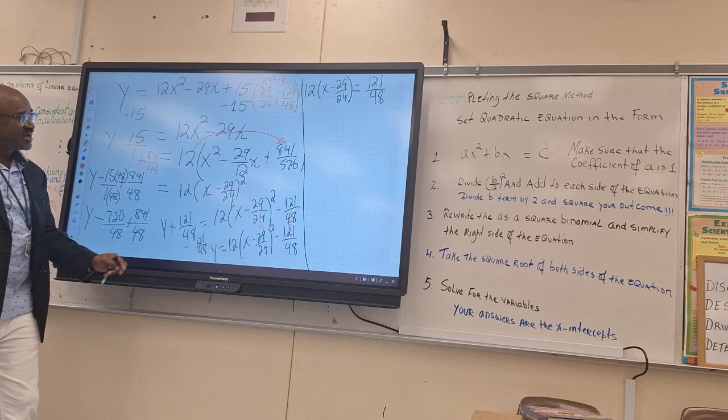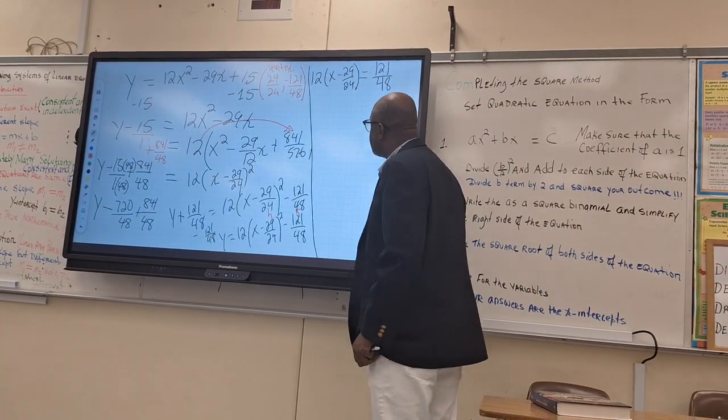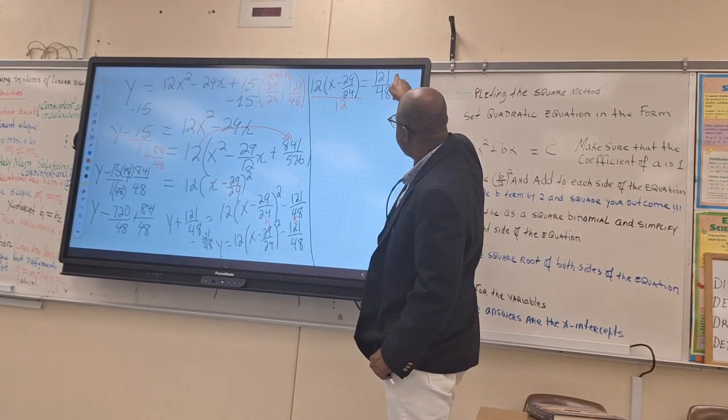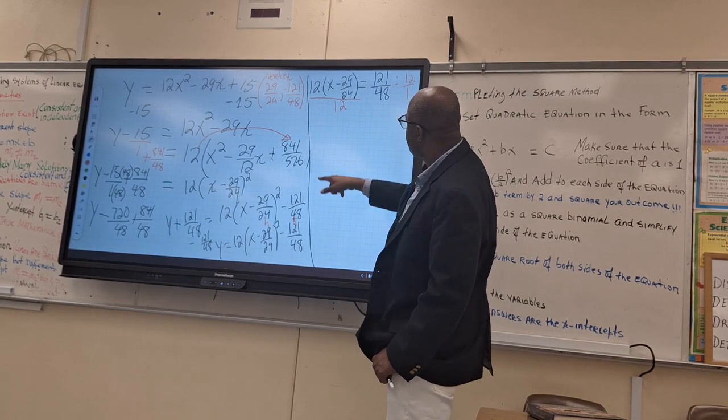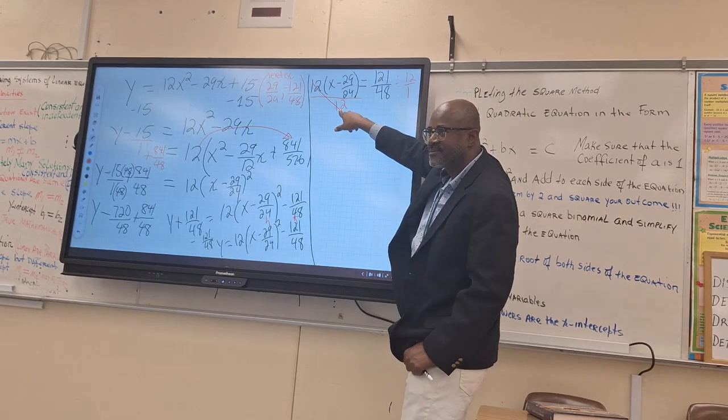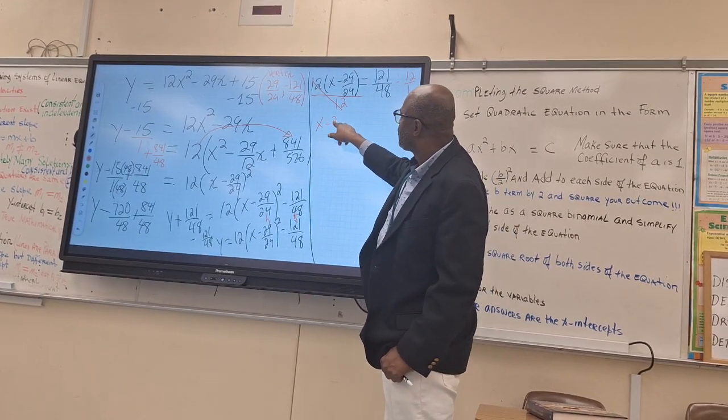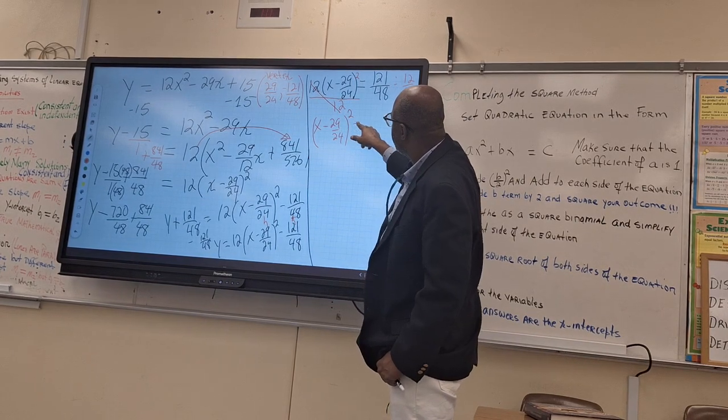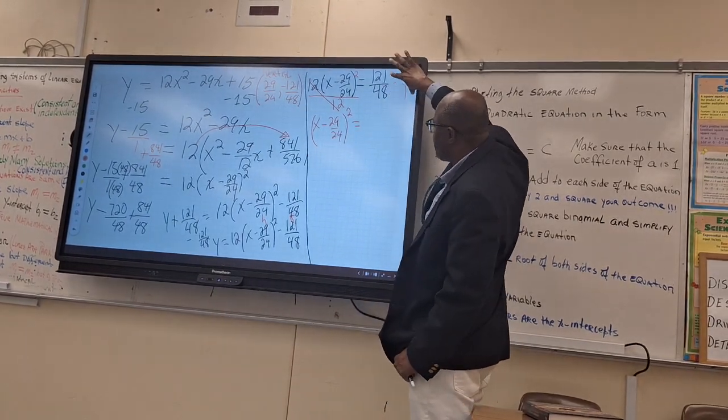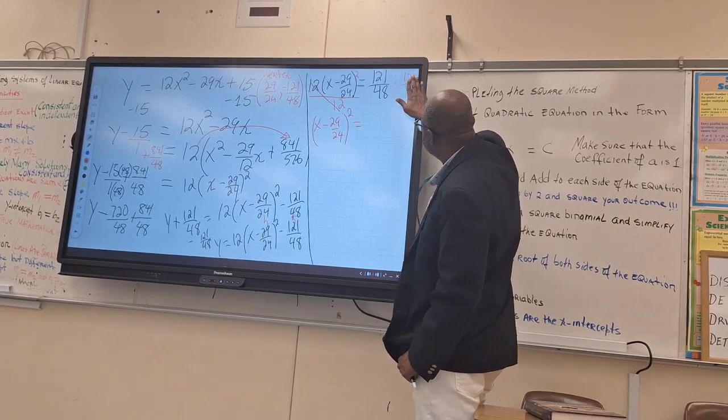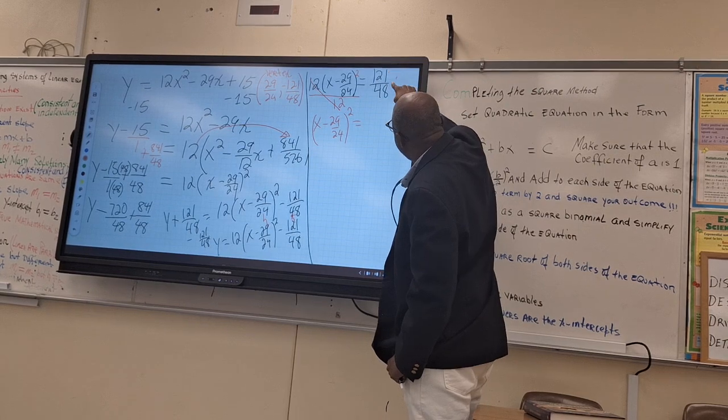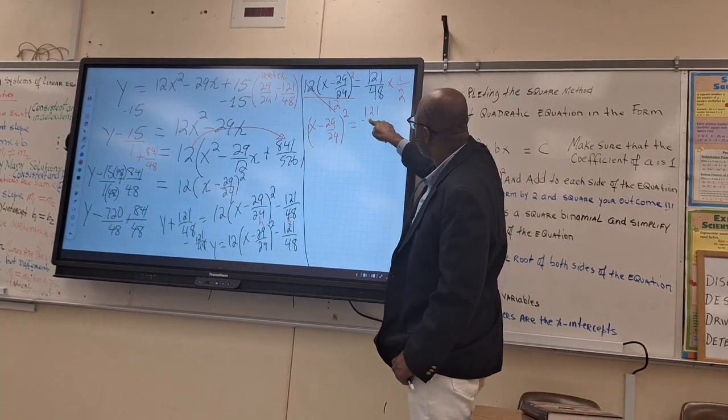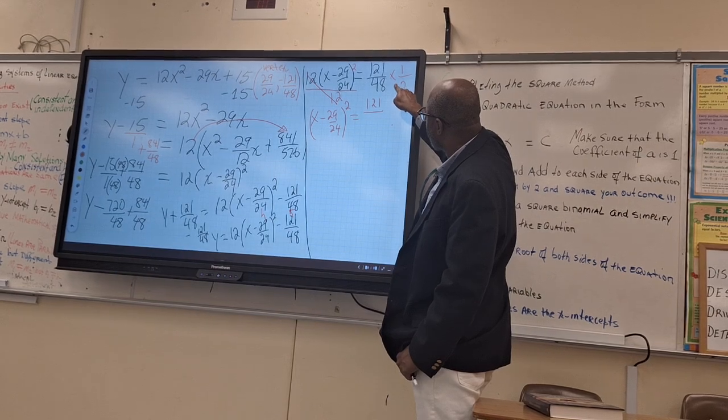The second part here we're going to solve for x. How do we cancel the 12? We divide both by 12. Divide this by 12 over 1. More fraction coming again. So this cancels each other out. So we end up with x minus 29 over 24 and this should be squared, equal. Again, we're going to keep and we're going to flip. That was 12, 1 over 12.